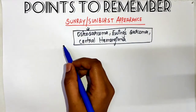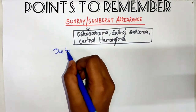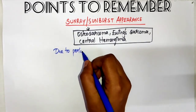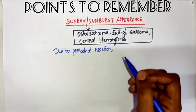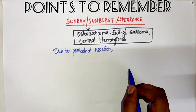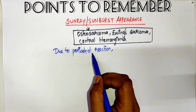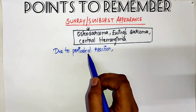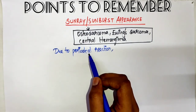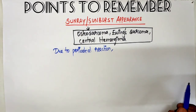This appearance occurs due to the periosteal reaction. Whenever the periosteum is irritated by a malignant or benign tumor, there will be a periosteal reaction. There are two patterns — it may be benign or aggressive.